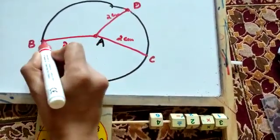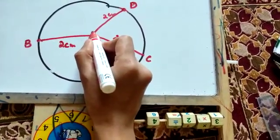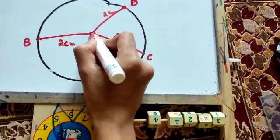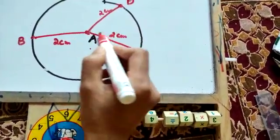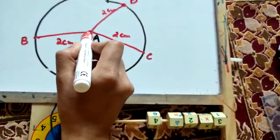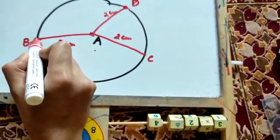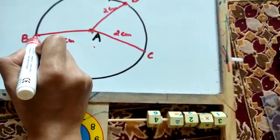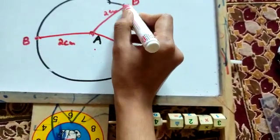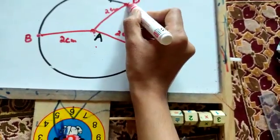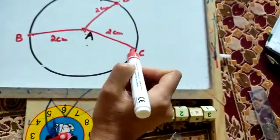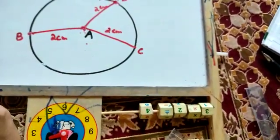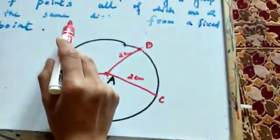One of the endpoints of all three segments is the center. For AB, one endpoint is center A; for AD, one endpoint is center A; for AC, one endpoint is also center A. The other endpoint of each segment lies on the boundary of the circle — B, D, and C are all lying on the circle.